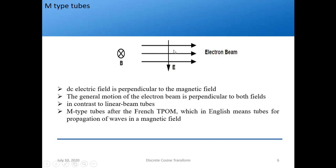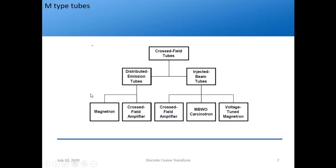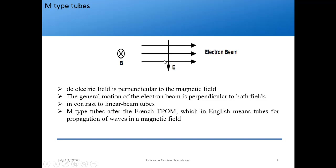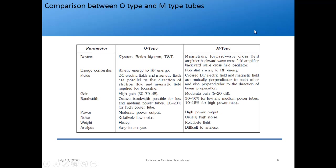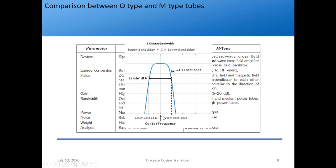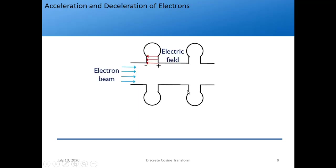In M-type tubes, the electric field lines are perpendicular to the direction of the electron beam. The main M-type devices studied are the magnetron, cross-field amplifier, and BWO, also called carcinotrons. In M-type, the magnetic field and electric field are both perpendicular to the electron beam direction. O-type provides high gain while M-type provides moderate gain. We also saw what octave bandwidth means: if the upper band edge is twice the lower band edge, it is called octave bandwidth.